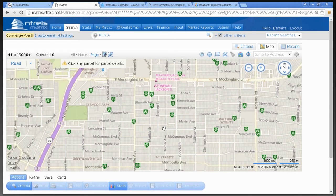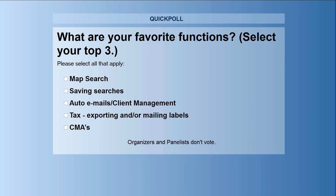Let's ask these fine people what functions they like best. Poll results: everybody loves CMAs — that's like 100%. They also love the map search and auto emails. When Gail and I teach classes, it's very helpful to know what your favorite things are and what you want to learn how to do.